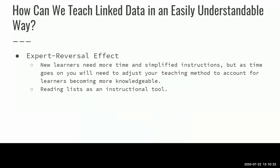Lastly, I want to talk about the expert reversal effect, which ties into much of what I've been talking about and relates to what I think is a learning technique we too often rely on: reading lists. The expert reversal effect states that newer learners need more time and simplified instructions, but as time goes on, you will need to adjust your teaching method to account for learners becoming more knowledgeable. This can be through incorporating more complex material or providing more opportunities for people to seek out information on their own. When first introducing a topic, one method I've seen people use is to assign a bunch of materials like readings or webinars, as opposed to a well-designed syllabus that scaffolds the learner through a topic. This can be too overwhelming for new learners, as they haven't necessarily been able to build the foundation needed to understand those materials. New learners need more guidance, but once they become more comfortable with the material, you can start recommending readings to allow them to expand the scope of their knowledge.